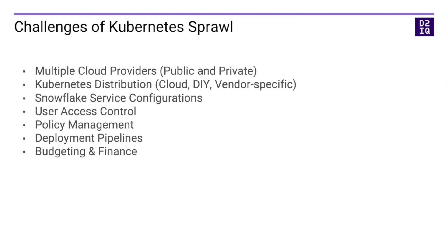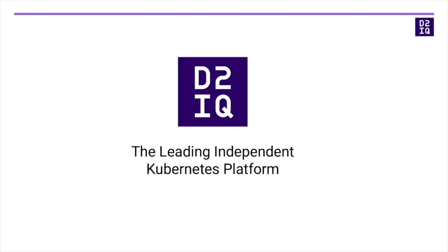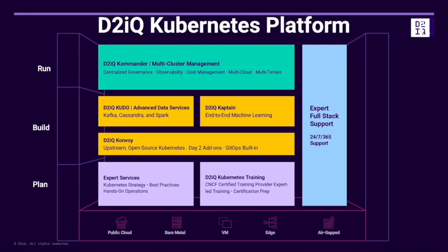How do you plan your budget for your Kubernetes deployments if they're in all these different locations with different price points? In comes Day2IQ's leading independent Kubernetes platform to solve this problem. This is Day2IQ's Kubernetes platform, commonly referred to as DKP. We support multiple install locations. We have expert services to help with your deployment, CNCF certified Kubernetes training, and Day2IQ Convoy — our easy button for deploying Kubernetes. But at the very top is the solution that's going to solve the issue of Kubernetes sprawl: that's Day2IQ Commander.